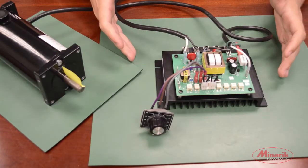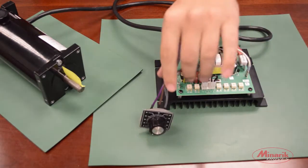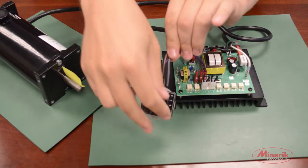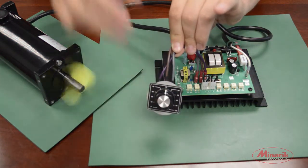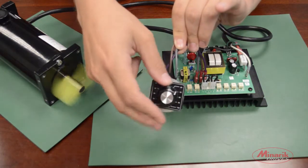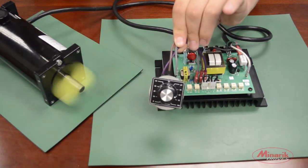Now we will demonstrate the drive in manual mode. We have our speed potentiometer hooked up and as we increase the speed potentiometer, the speed of the motor increases.